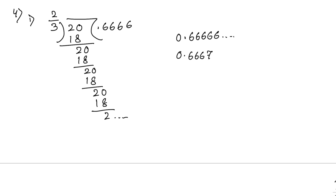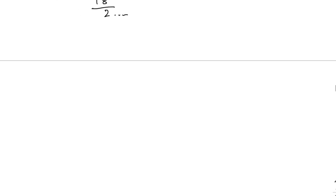Convert 0.6667 to percentage by multiplying by 100, giving 66.67 percent. Next, sum number 4, second part: 5 by 6 equals 0.8333.